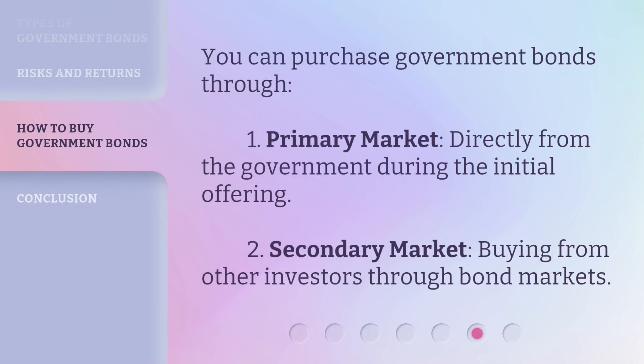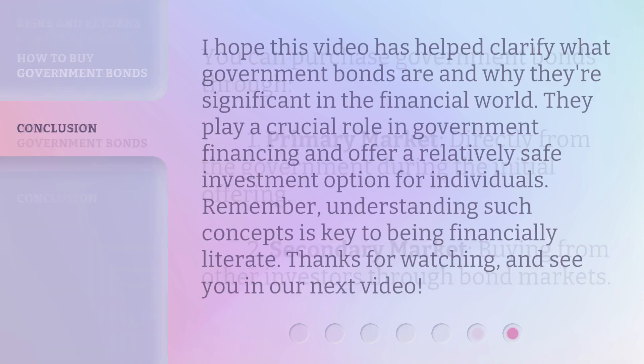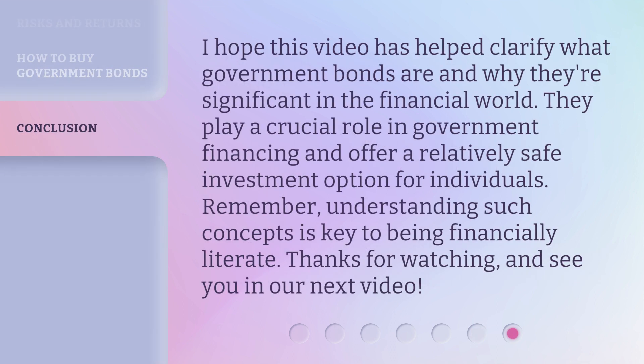You can purchase government bonds through two main channels: 1. Primary market — directly from the government during the initial offering, and 2. Secondary market — buying from other investors through bond markets.